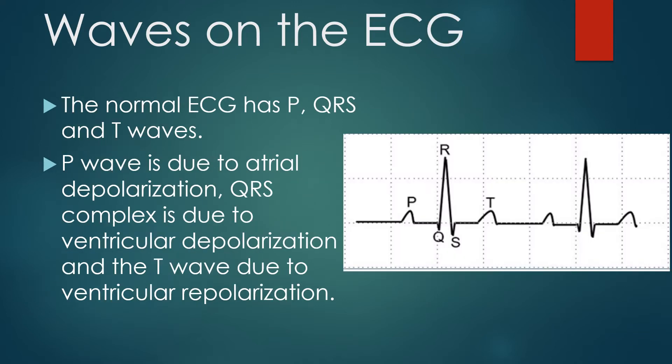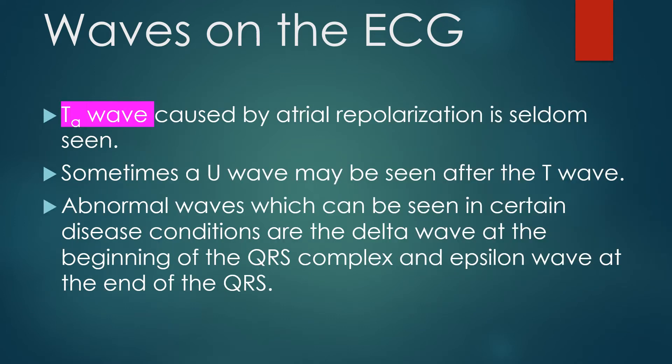The normal ECG has P, QRS, and T waves. The P wave is due to atrial depolarization, QRS complex is due to ventricular depolarization, and the T wave is due to ventricular repolarization. The TA wave, caused by atrial repolarization, is seldom recorded on the surface ECG. Sometimes a U wave may be seen after the T wave. Abnormal waves seen in certain disease conditions include the delta wave at the beginning of the QRS complex and the epsilon wave at the end of the QRS.